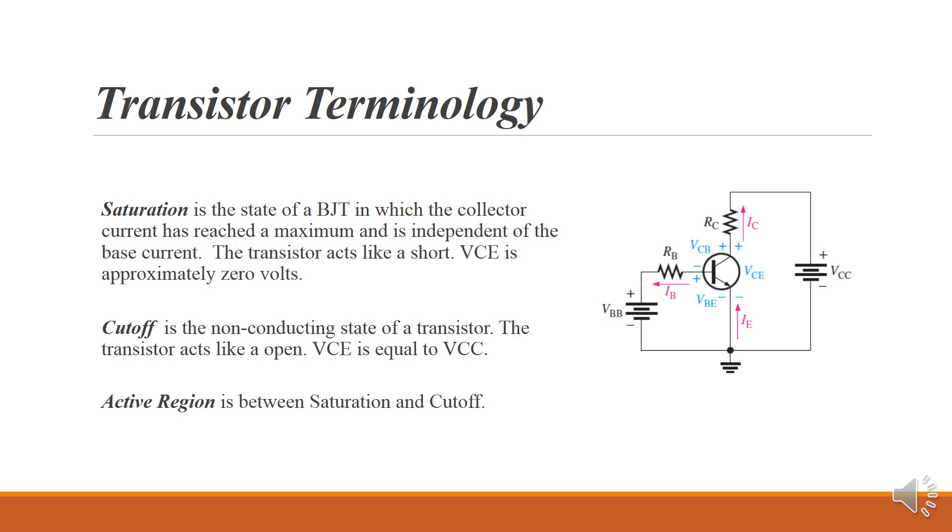On the other side, cutoff is the point at which the transistor is acting like an open, so there's no current. IC is zero. So any decrease in IB, IC is already zero, so it's in cutoff. The transistor is acting like an open and VCE will be equal to VCC.